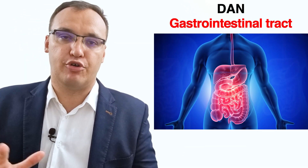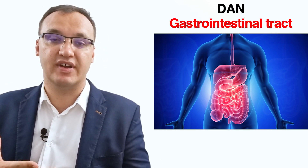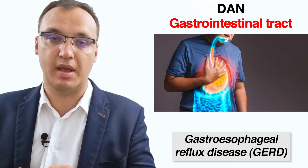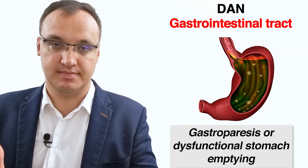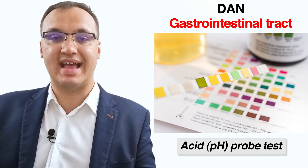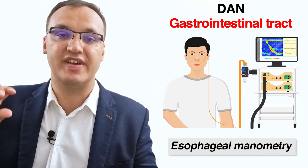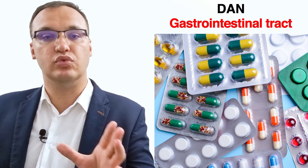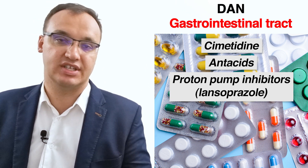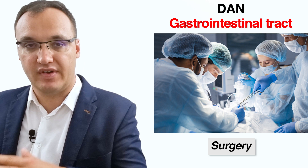Now let's look at the gastrointestinal system. Significant effects on the digestive system include gastroesophageal reflux disease — abbreviated as GERD — gastroparesis, which is a slowing of stomach emptying, and chronic diarrhea. The most common symptoms of GERD are heartburn with acid reflux. GERD is diagnosed by upper endoscopy, an acid pH probe test, esophageal manometry, and an x-ray of the upper digestive system. Treatments include medications like cimetidine, antacids, and proton pump inhibitors such as lansoprazole, and surgery if very severe.